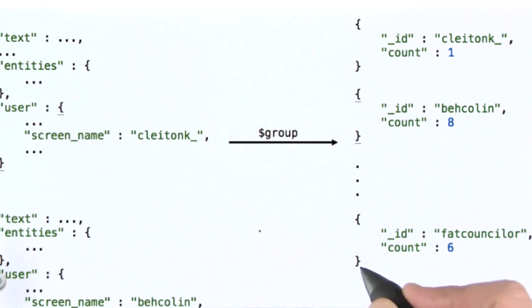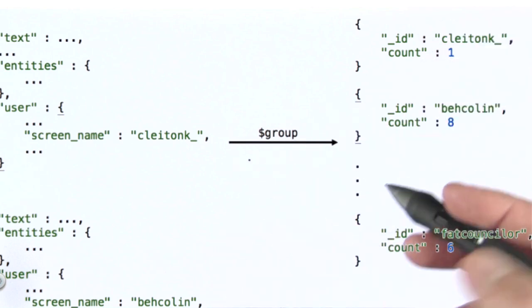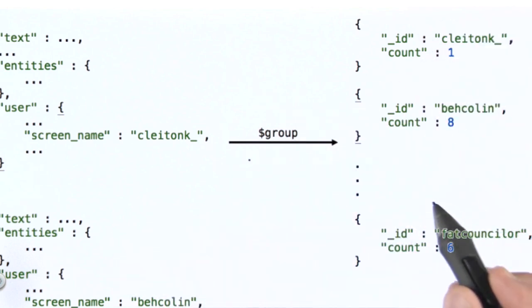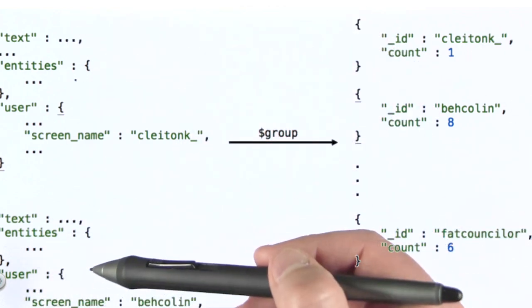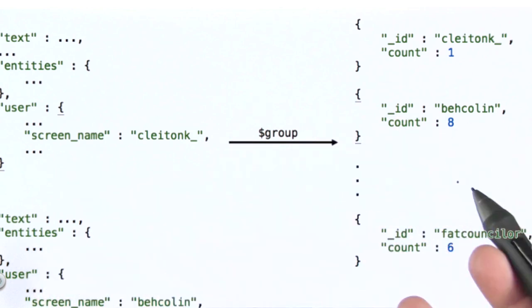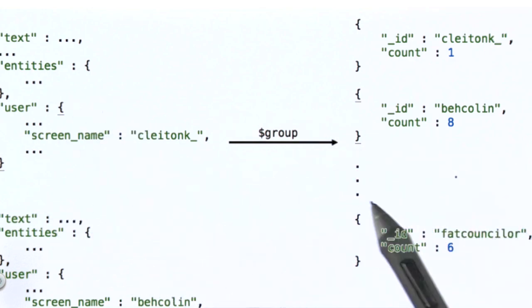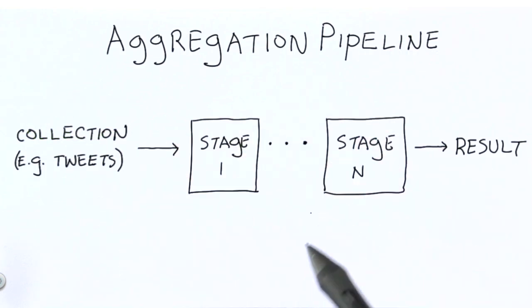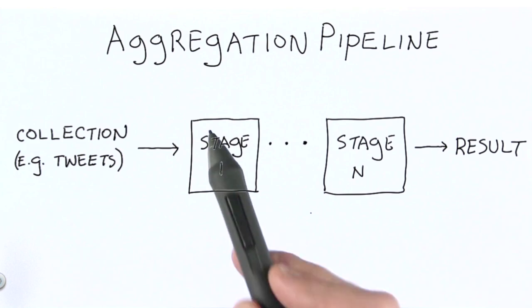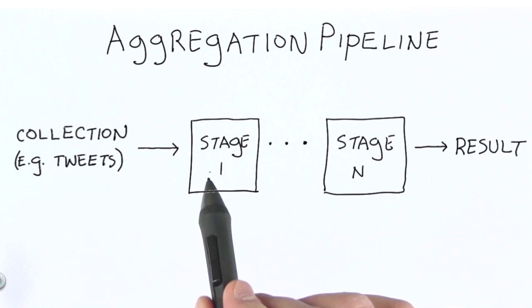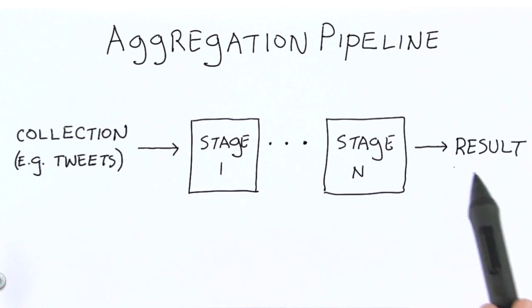One thing that is very important to bear in mind when thinking about the aggregation framework in MongoDB is that depending on which operator is used in a given stage, that stage may be reshaping the data, sometimes quite significantly. The collection of tweets contains dozens of fields. What our group stage does is create documents that look very different from these in order to do its job. The whole idea with the aggregation pipeline is that you use aggregation operators to construct stages that will, in a series of steps, process your data in such a way that it produces the results you need.